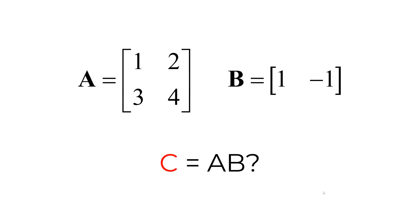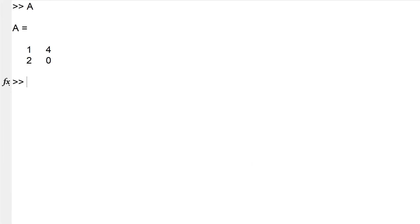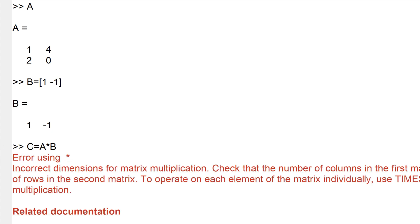What about given matrices A and B? Since the column size of A is different from the row size of B, you cannot multiply. Let's see what happens in command window. As expected, it ends up with error saying inner matrix dimension must agree.